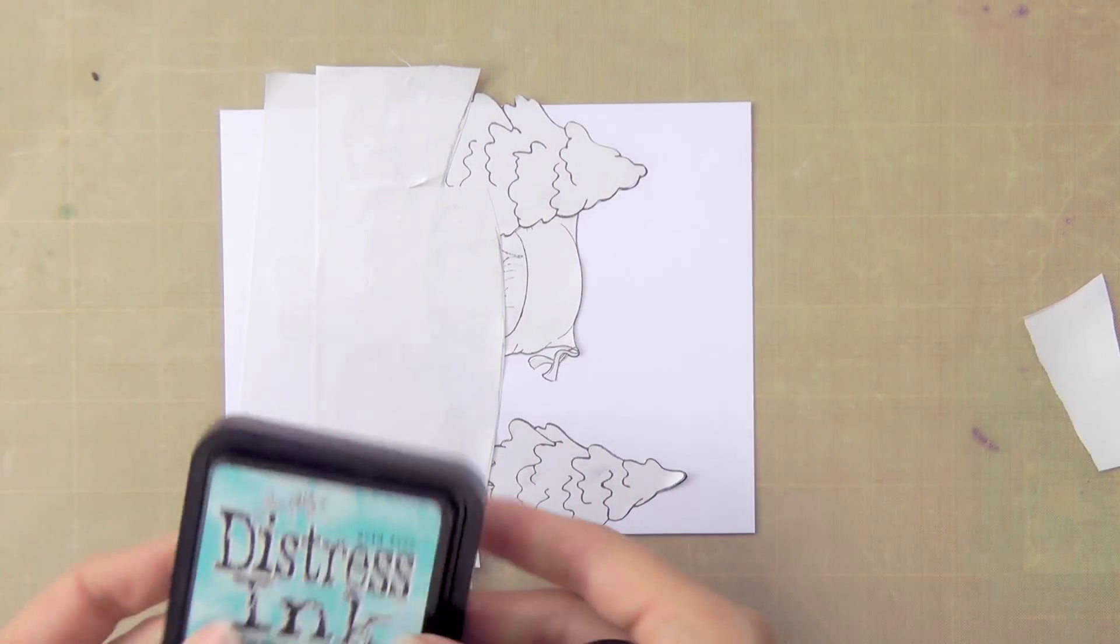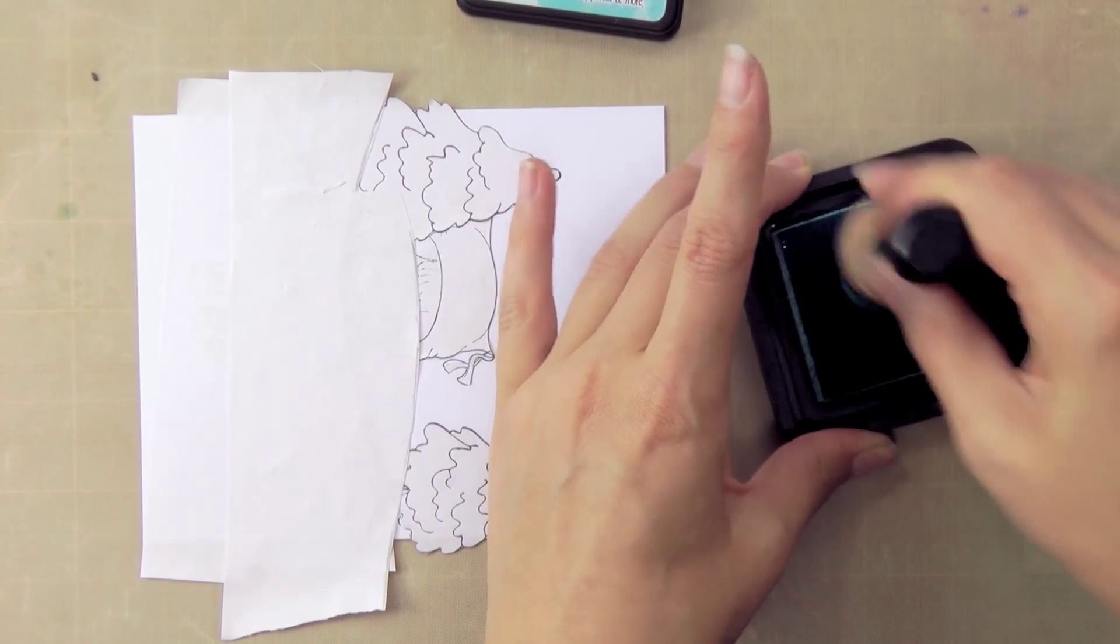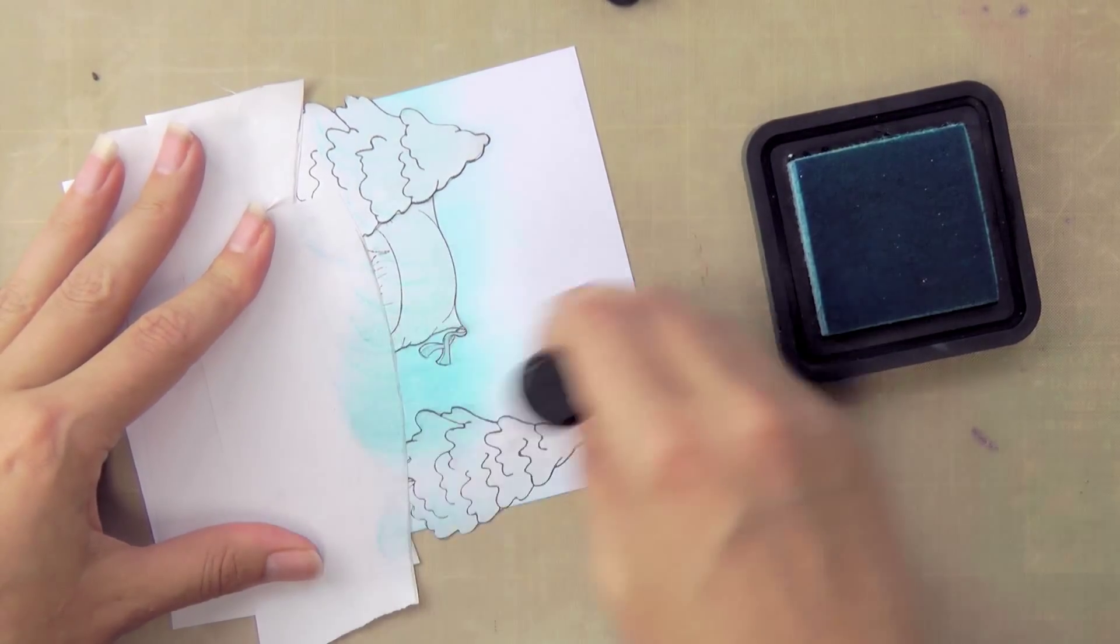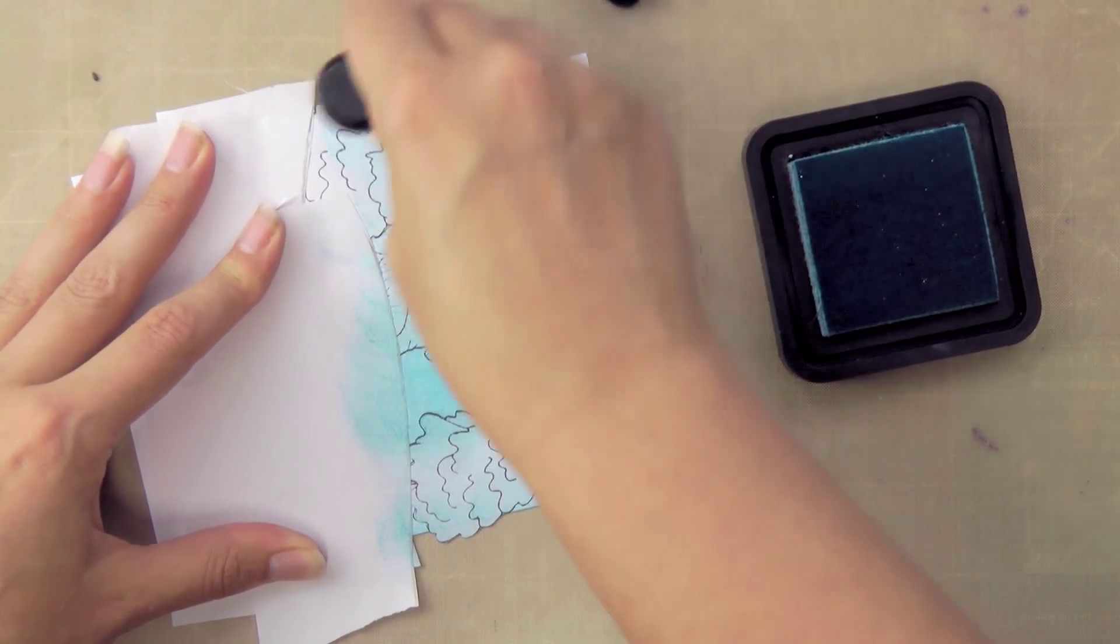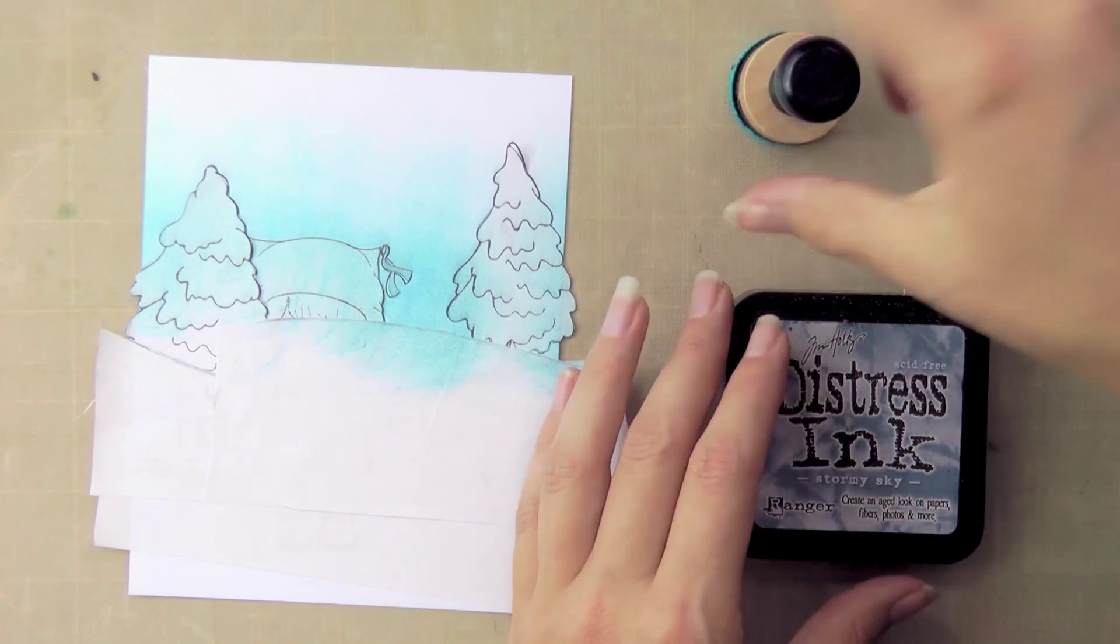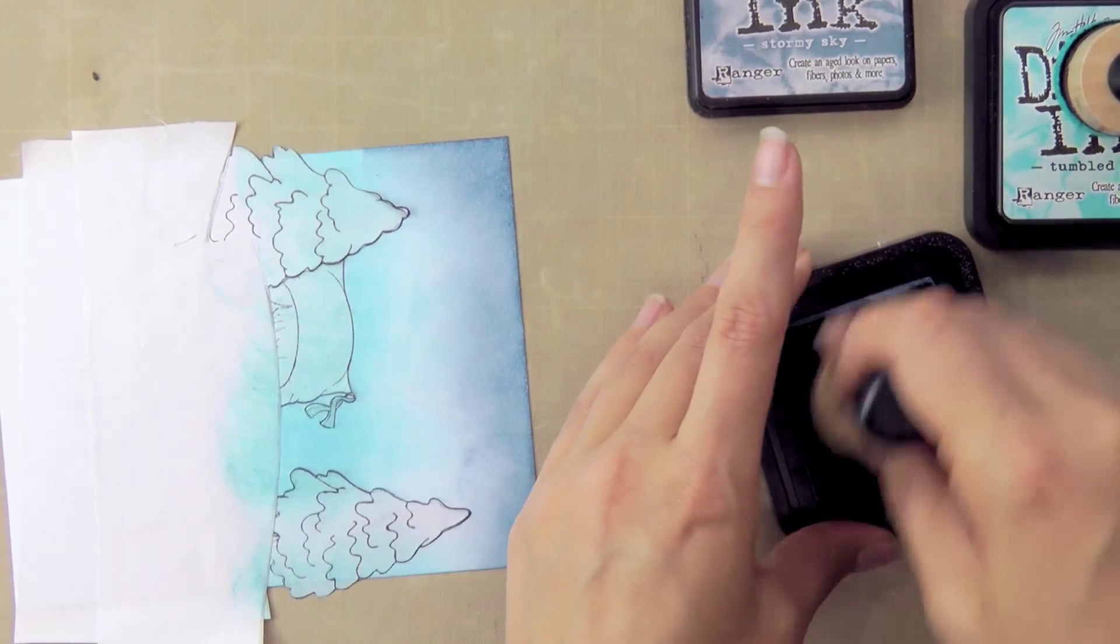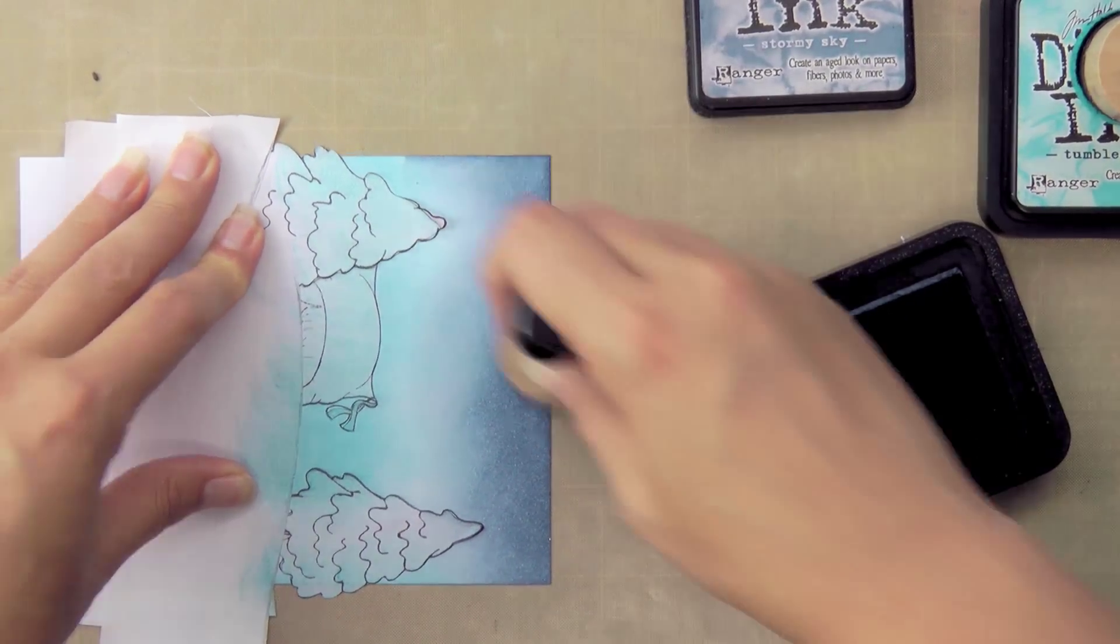And then we're going to be ready to ink the sky. I'm starting with the tumbled glass and I love these round foam pads. They're perfect for this type of work where you don't want to get the edges. I found that with the rectangular ones I'd always get lines. So I'm going to do the top part of the sky with the stormy sky. And I'm just going to use a round motion here to try and reduce any lines. And I'm not taking it all the way down.